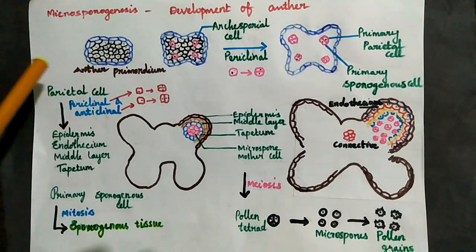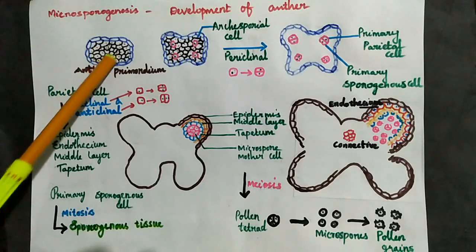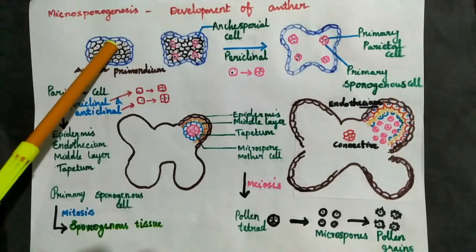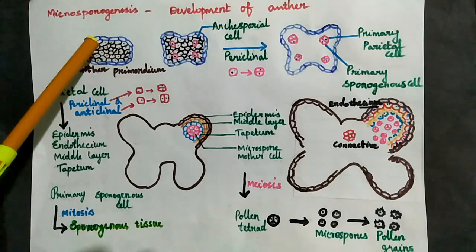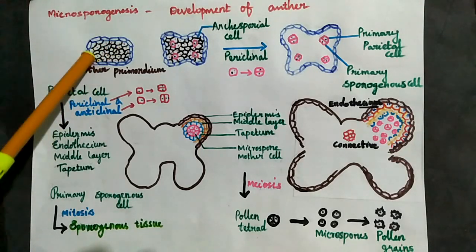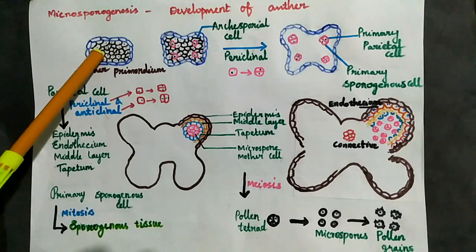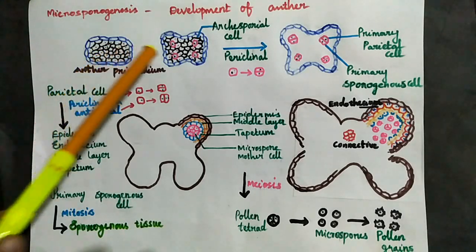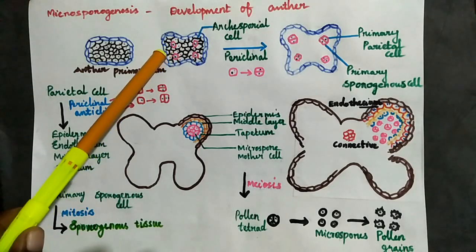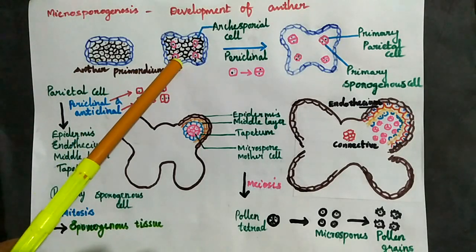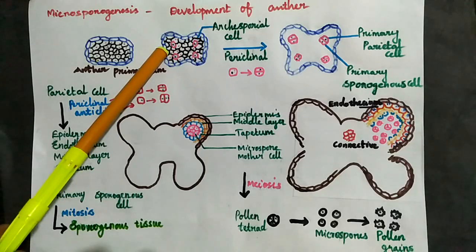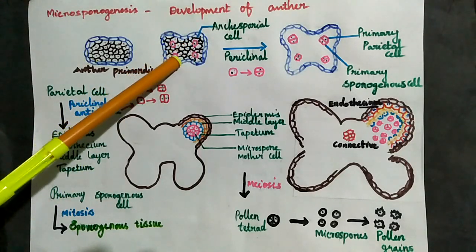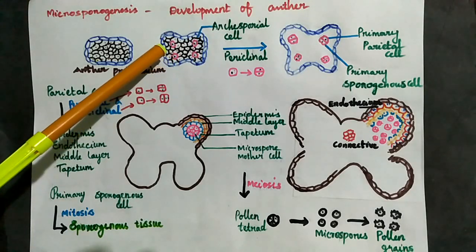Step by step, in the anther, the microspores develop. First, there is the epidermis layer, then the hypodermal cells. The hypodermal cells give rise to the archesporial cells. The microspore mother cells form from the archesporial cells — in general, the archesporial cells are the starting point.